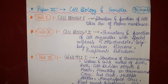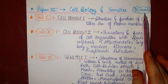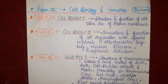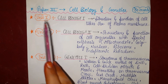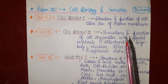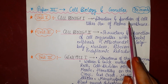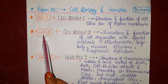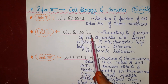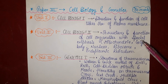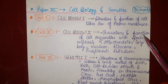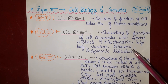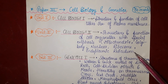Paper 3rd covers Cell Biology and Genetics. It also carries 50 marks in exams and is categorized into four units. Unit 1 is Cell Biology — first part — in which we study cell structure and function, and the ultrastructure of the plasma membrane. Unit 2 is Cell Biology second, in which we study cell organelles with special emphasis on their structure and function — like mitochondria, Golgi body, nucleus, ribosome, and endoplasmic reticulum.